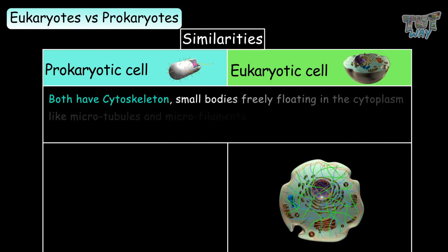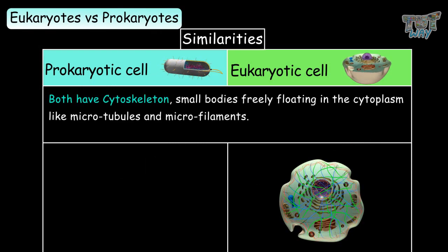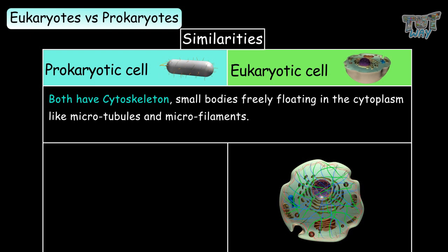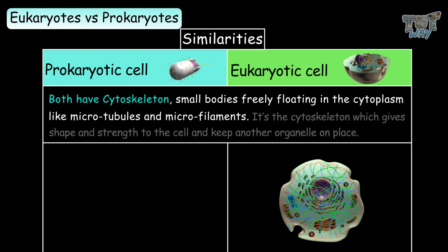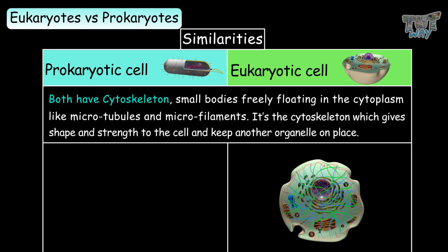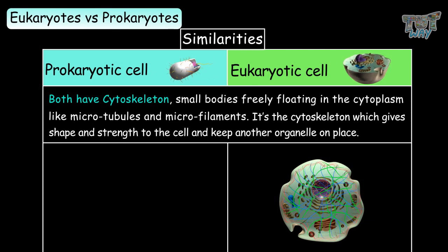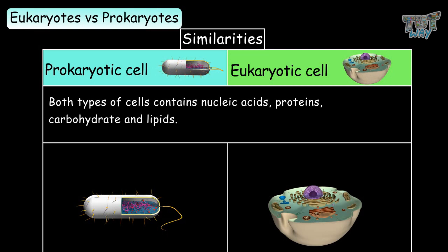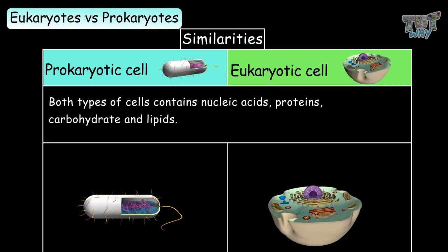Both have cytoskeletons. Microtubules and microfilaments constitute the cytoskeleton, which gives shape and strength to the cell and keeps other organelles in place. Both types of cells also contain nucleic acids, proteins, carbohydrates, and lipids.